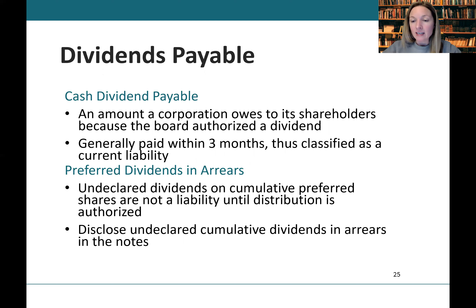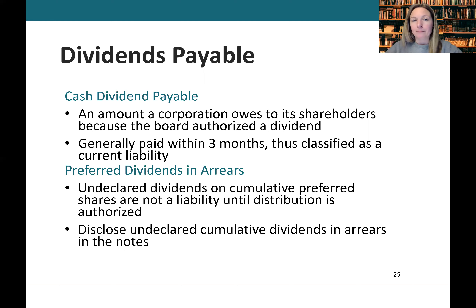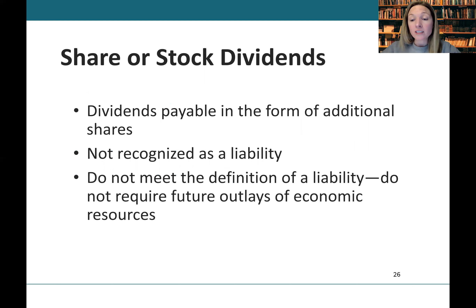Dividends payable. There are a variety of different types of dividends. A cash dividend payable is an amount a corporation owes to its shareholders because the board has authorized dividends — it's generally paid within three months and is therefore classified as a current liability. Preferred dividends in arrears are not a liability until the distribution is authorized; if not authorized, this must be disclosed in the notes. Share or stock dividends, because they do not require the payment of cash, are not recognized as a liability.